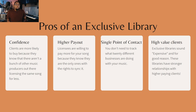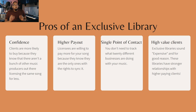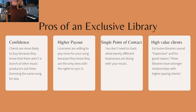The next pro of an exclusive library is higher payout. Nine times out of ten, you're going to get more money from songs placed with an exclusive library. Licensees are willing to pay more because they know they are the only ones with the rights to sync it — that increases the price of your music and makes it more expensive by default. Next, you have a single point of contact — you don't need to track what 20 different businesses are doing with your music.